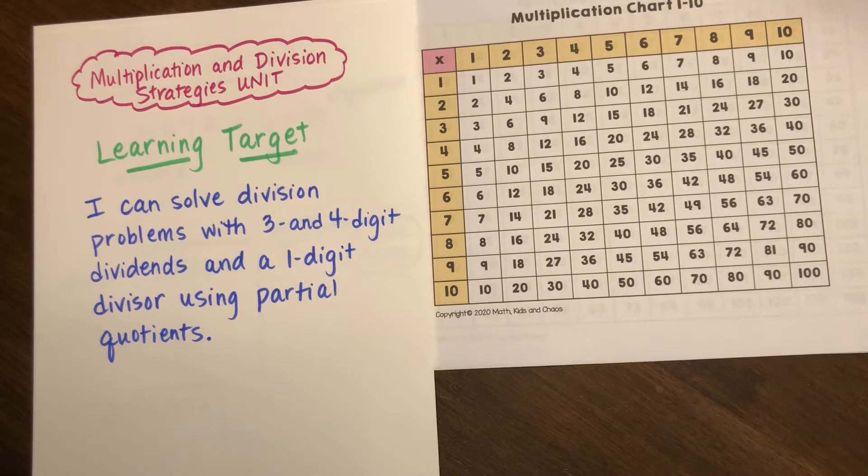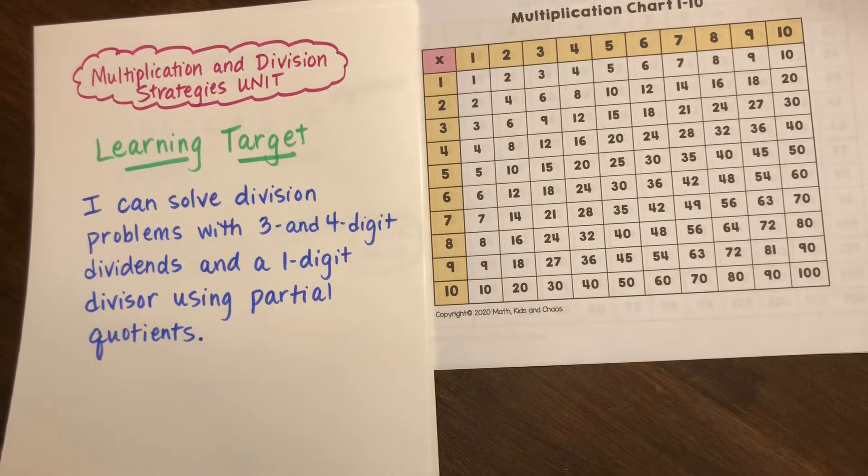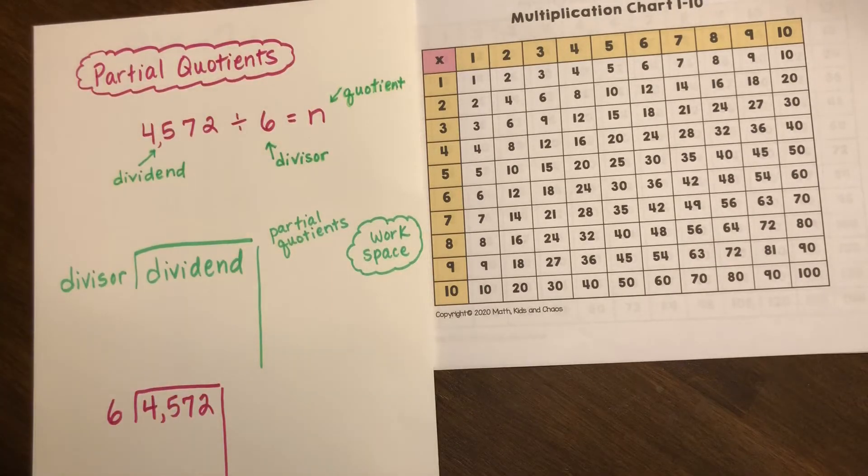Today's learning target states: I can solve division problems with three and four digit dividends and a one digit divisor using partial quotients. You learned the partial quotients method last spring so we're going to review it today so that you feel confident in using this method.